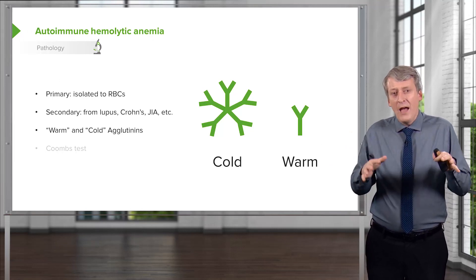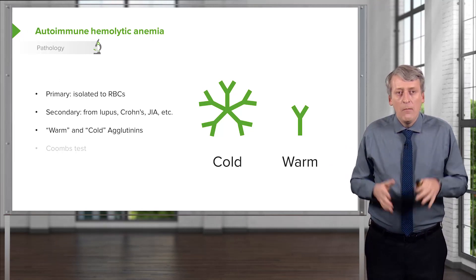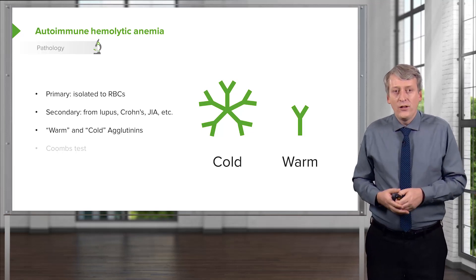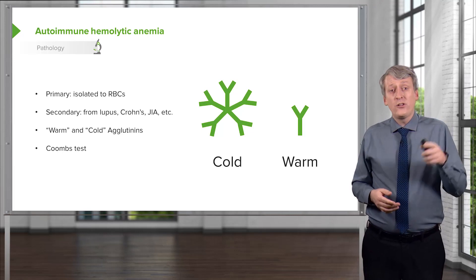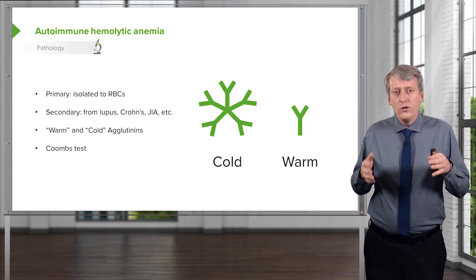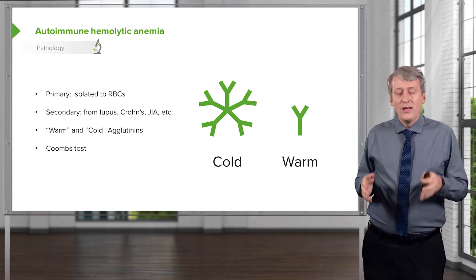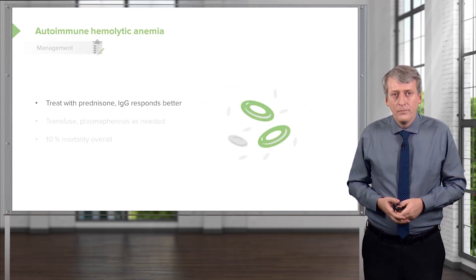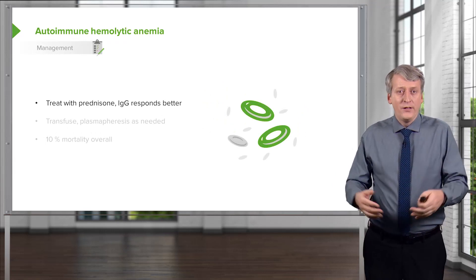It doesn't really matter so much — we're going to manage this fairly similarly, but that's the distinction. How do we make this diagnosis? It's the Coombs test. You get a Coombs test and the patient has antibodies against their red blood cells. If we see that, we're going to treat with prednisone.